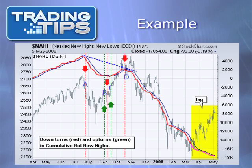Then, starting at point B, cumulative net new highs briefly exceeded its moving average a few times, but never confirmed until point C. From there, the stock has a minor surge, before there is a bearish turn at point D that turns into quite a doozy.